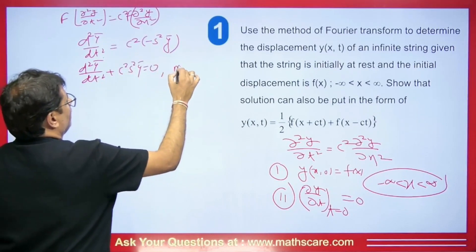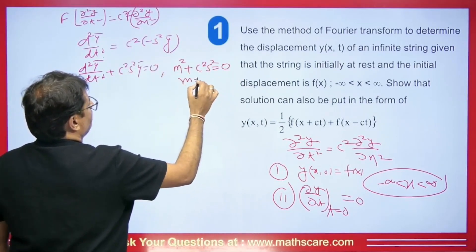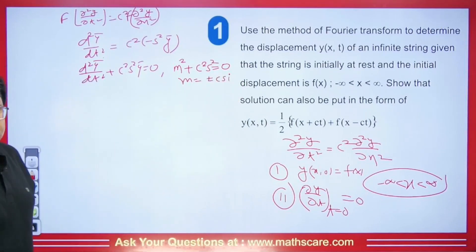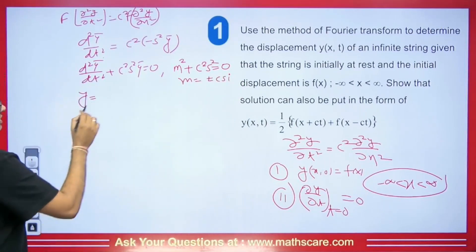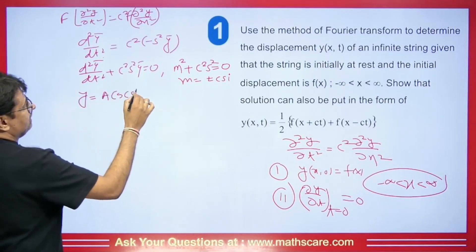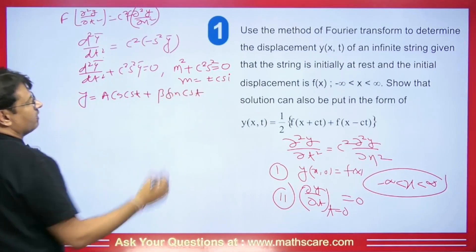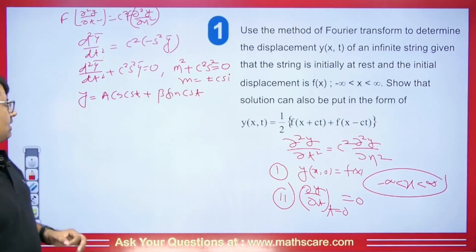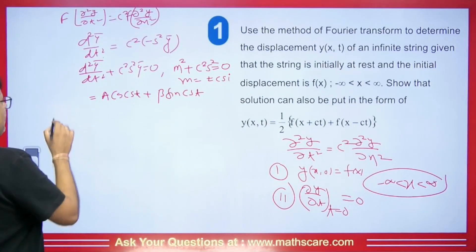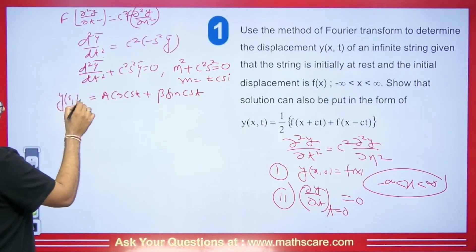Writing the auxiliary equation: m² + c²s² = 0, so m = ±csi. The complementary function is ȳ(s,t) = A·cos(cst) + B·sin(cst). Note that this is ȳ — the Fourier transform of y(x,t) — so it is a function of s and t.